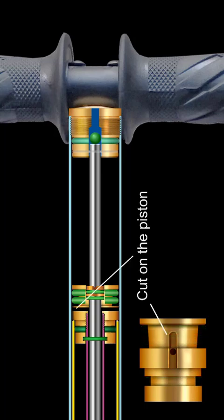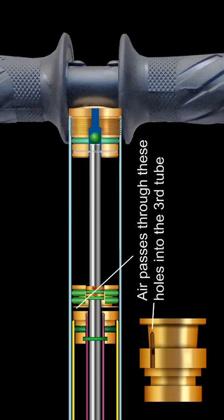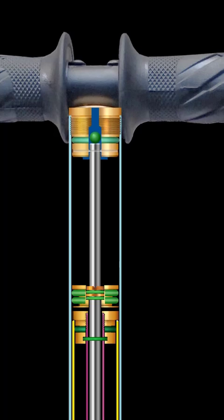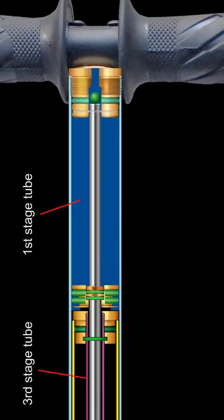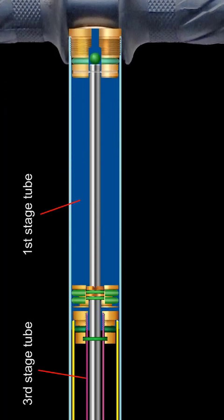The holes in the piston allow the air into the third tube from the first tube.